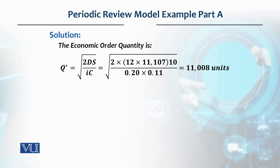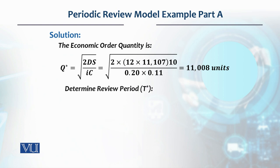We need to calculate the review period, which is T = Q divided by D. On that basis the review period will come as a fraction of years, then we convert it according to the lead time — which is given in months in this case. Since it's on a monthly basis, whatever fraction we get, we multiply it by 12, and it will come into months.